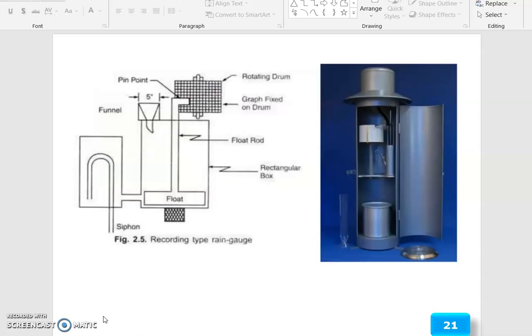See this feature, the pin point. This is a 5 inches diameter. The rotating drum will occur. Graph fixed on drum. The funnel, the float, the rectangular box, float siphon point.